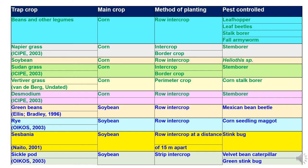In soybean crops, green beans are used as a row intercrop to control Mexican bean beetle, and rye is used as a row intercrop to control corn seedling maggot. Sesbania is used as a row intercrop to control stink bug. Sicklepod is used as a strip intercrop to control velvet bean caterpillar and green stink bug.